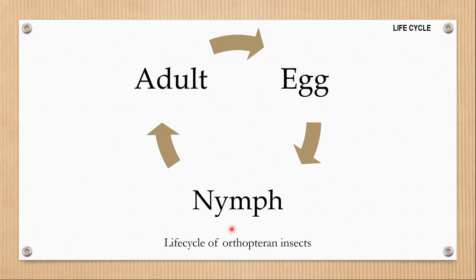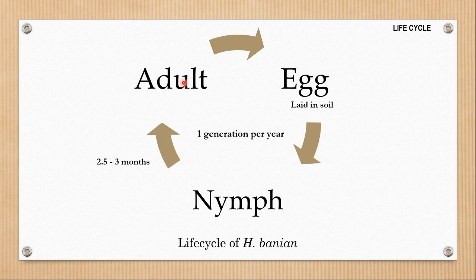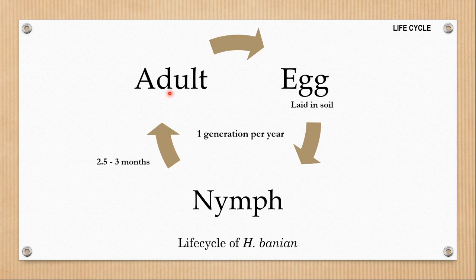Let us look at its life cycle. In any orthopteran insect's life cycle, you can see three stages: the adult stage, the female lays eggs, the eggs hatch and become nymphs, and the nymphs go through molting stages to again become the adult. In the life cycle of Hieroglyphus banian, the eggs are laid in soil. Many grasshoppers actually lay their eggs in soil. The nymphs first hatch into the soil and as they grow older, they move to the plants and start feeding there.